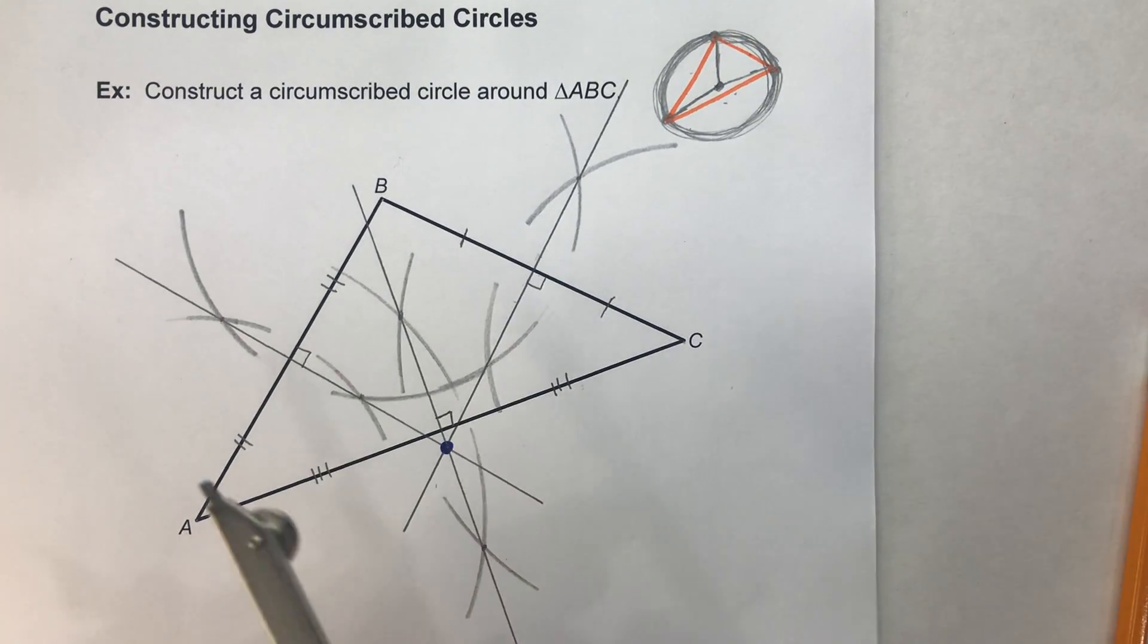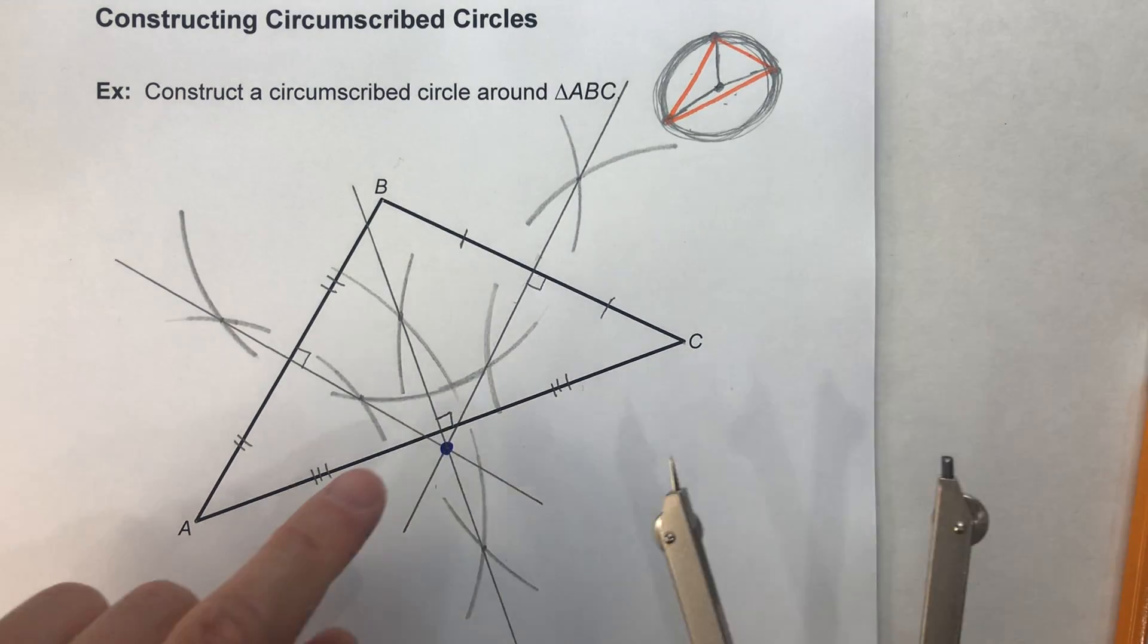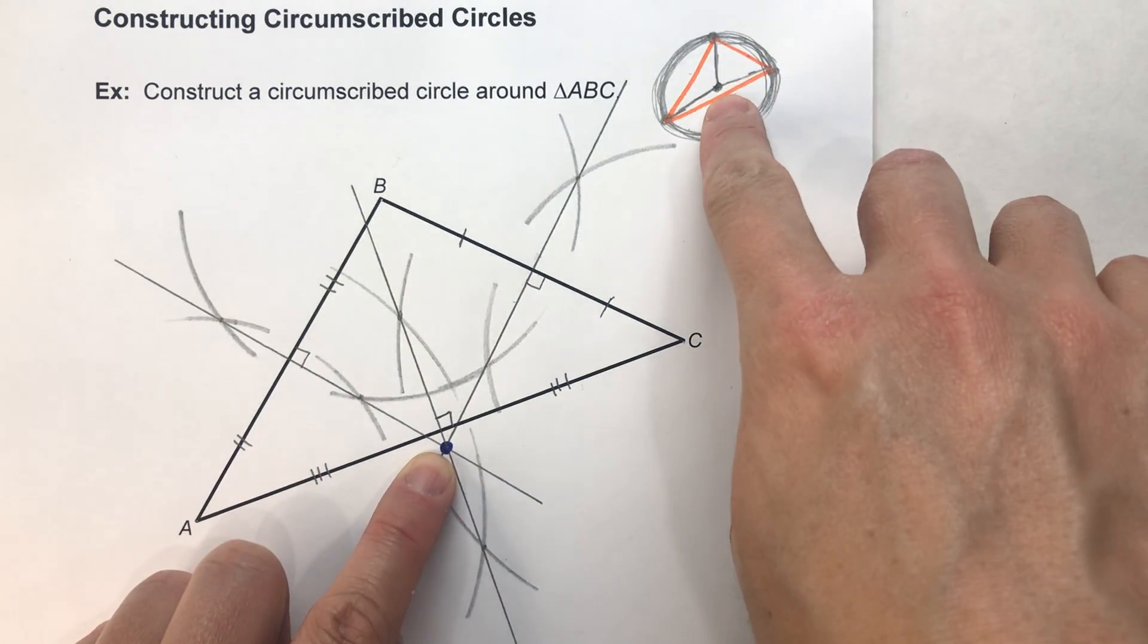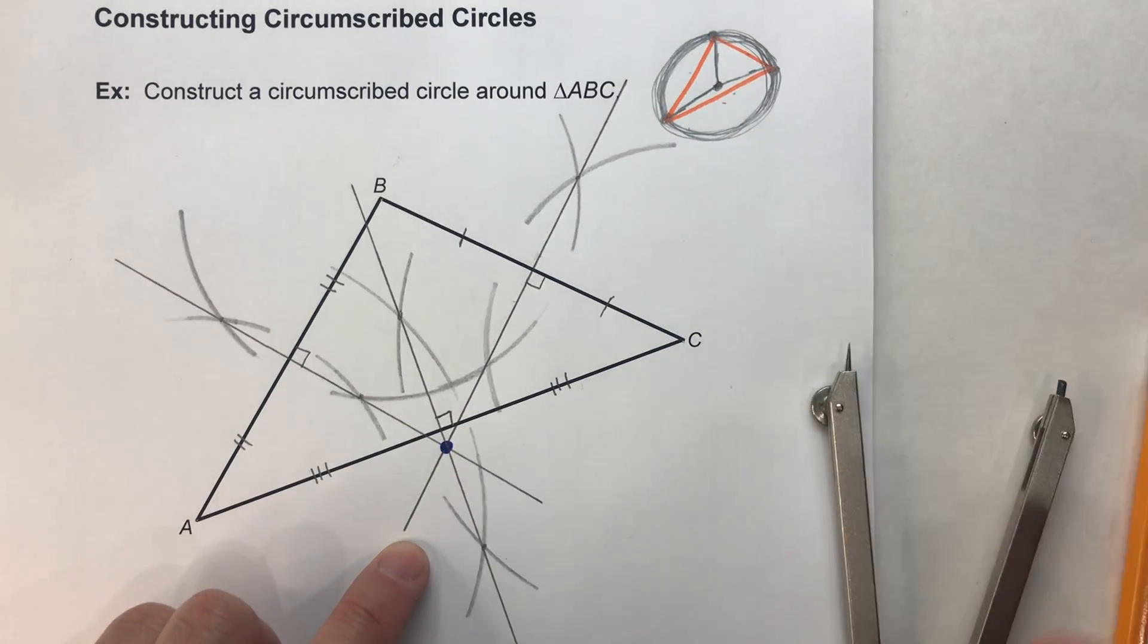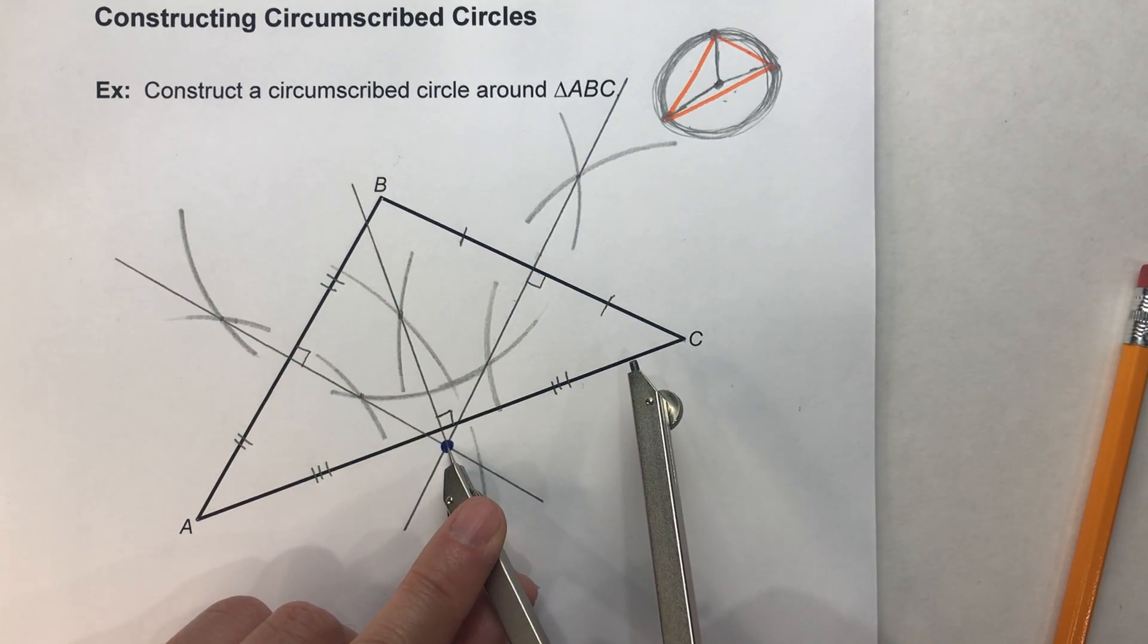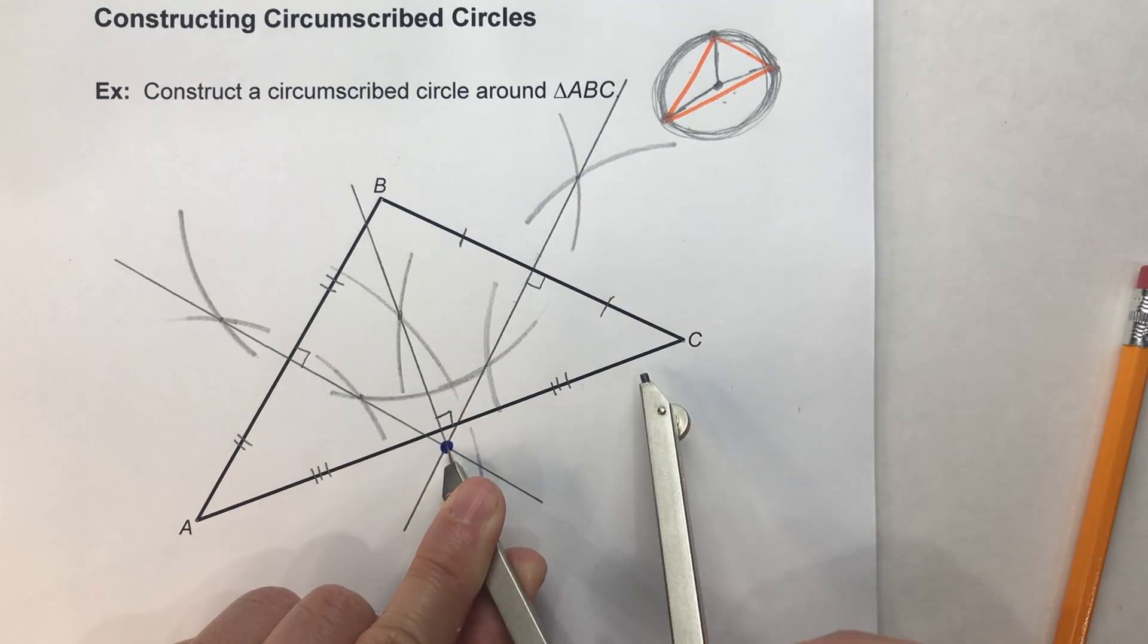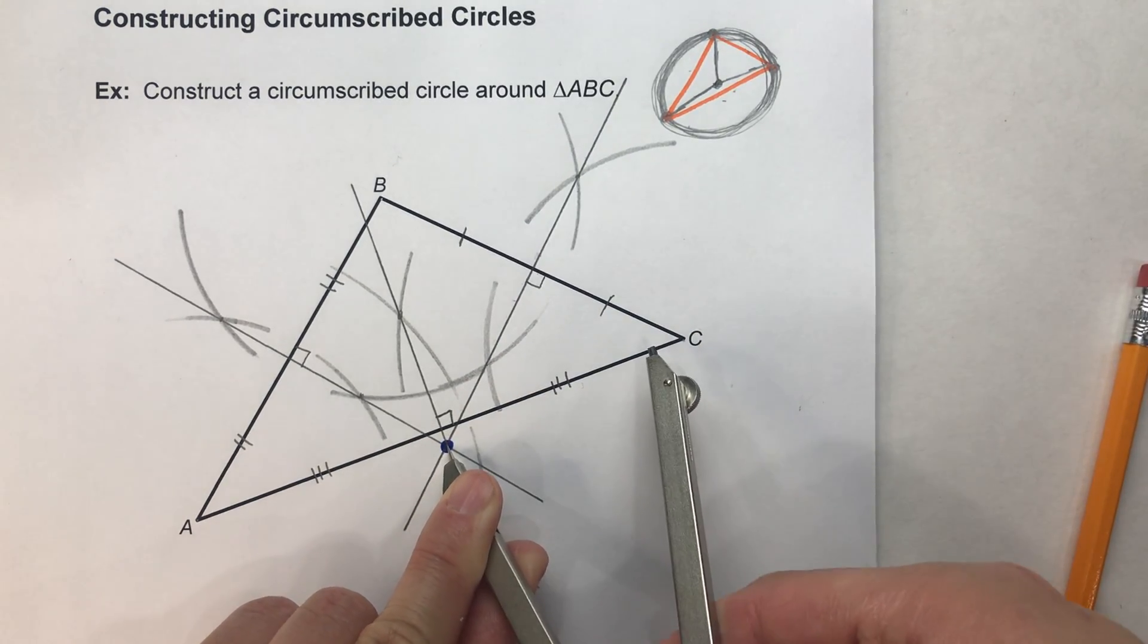So now, last thing, I need to take my compass. And I know this is the center of my circumscribed circle. So what I'm going to do is, I'm going to take my compass, using that as my center, I'm going to make my compass setting go from the center to any of the three vertices of my triangle.